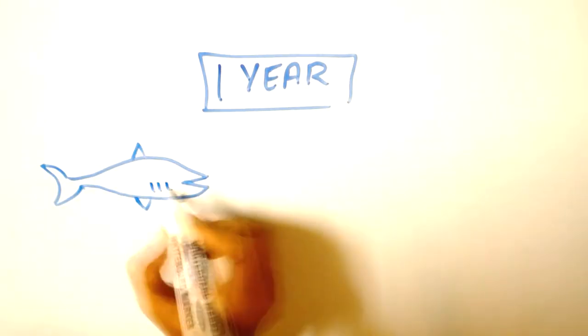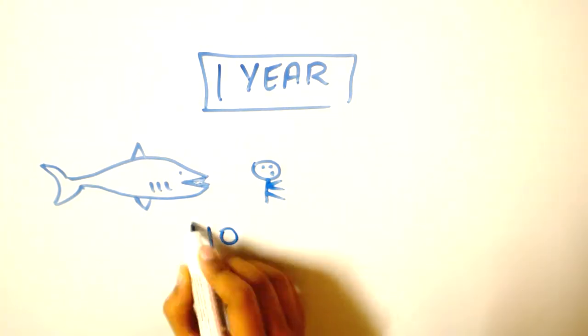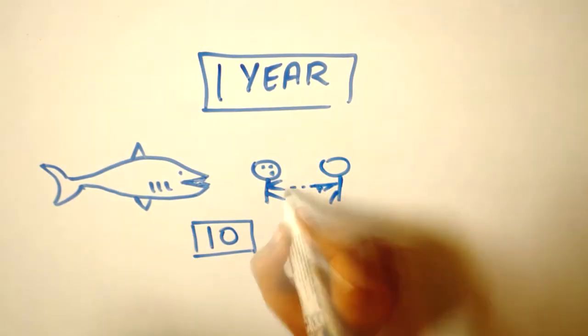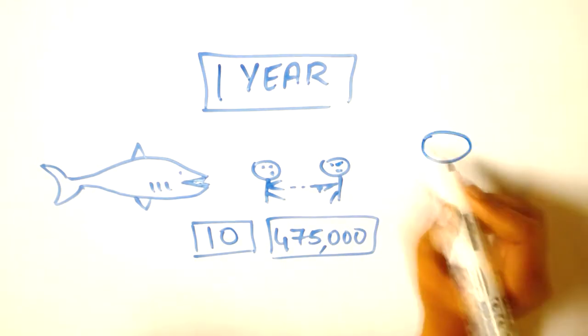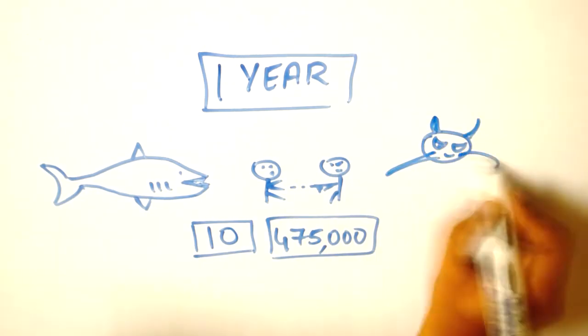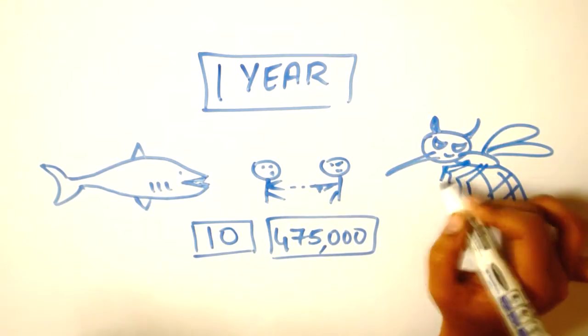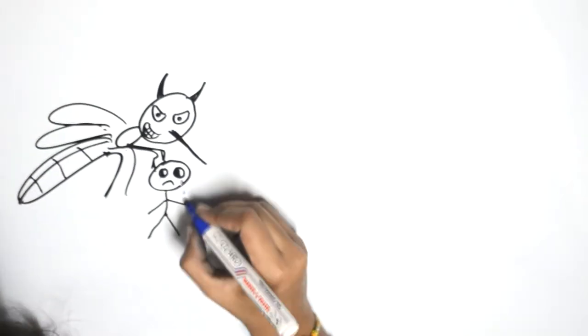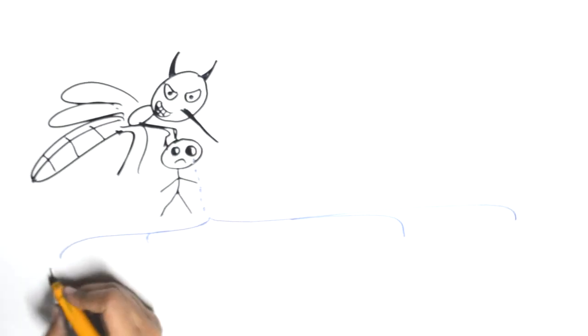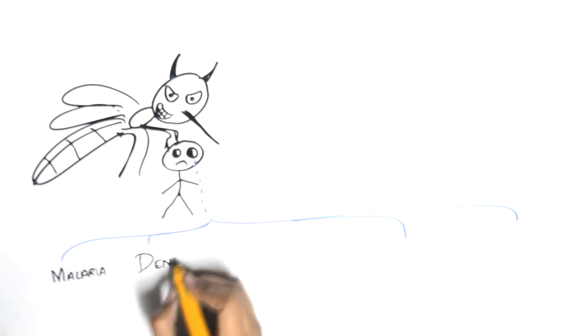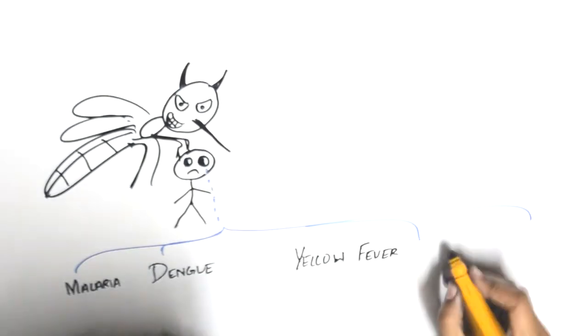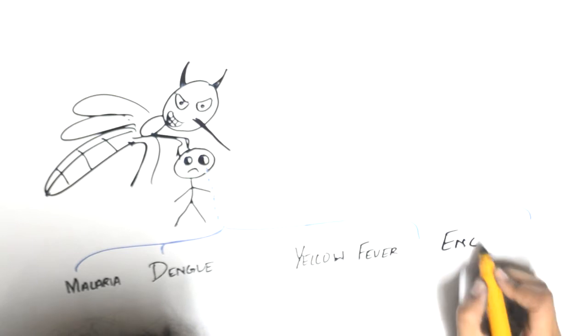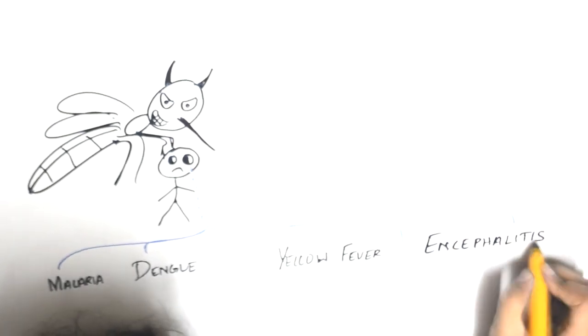Here's something to put things in perspective. Sharks kill 10 people annually. Humans murder 475,000 people annually. And mosquitoes kill a whopping 725,000 people every year. Shark-infested waters seem like paradise in comparison. The world's deadliest animals have got us in their iron grip using weapons like malaria, dengue, yellow fever and encephalitis. It threatens half the world's population and causes billions of dollars in lost productivity.